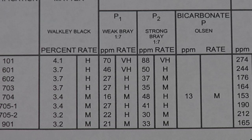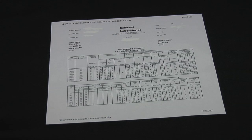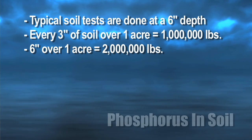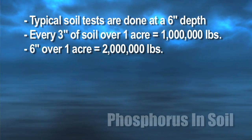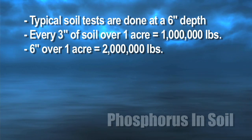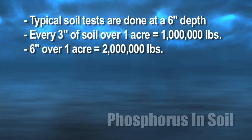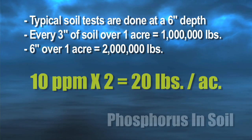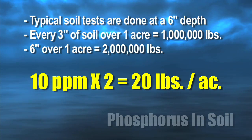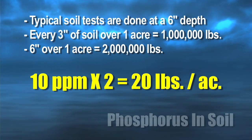If our pH is below 7 we'd use that weak Bray test. So let's talk about what these tests really mean. For both the P1 and the Olsen test, if we've got 10 parts per million out there, how do we know how to fertilize? Typical soil tests are done at a 6-inch depth, and in every 3 inches of soil across 1 acre we have roughly a million pounds. So in a 6-inch sample we have roughly 2 million pounds represented, and if you have 10 parts per million you take that times 2, giving us 20 pounds per acre of phosphorus.